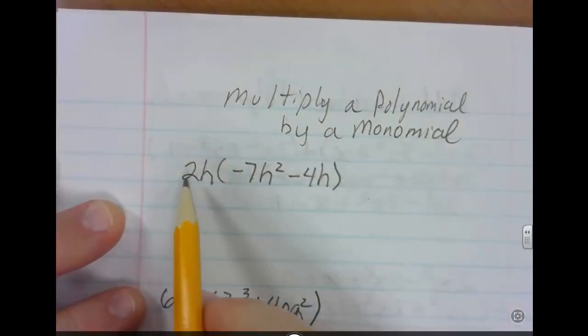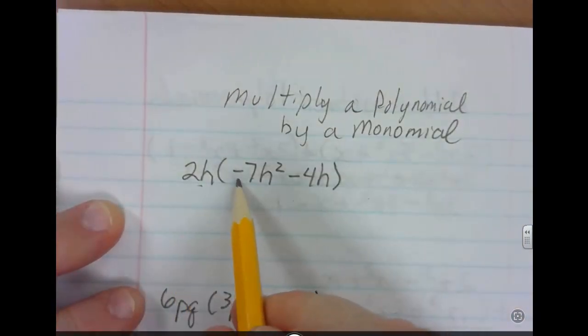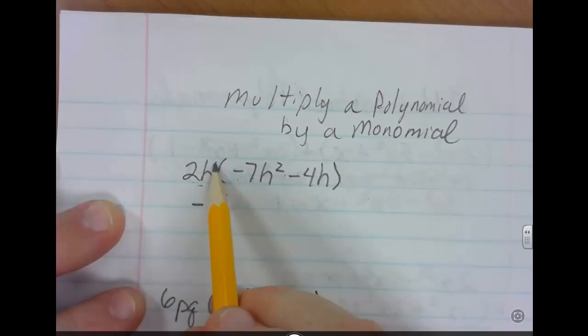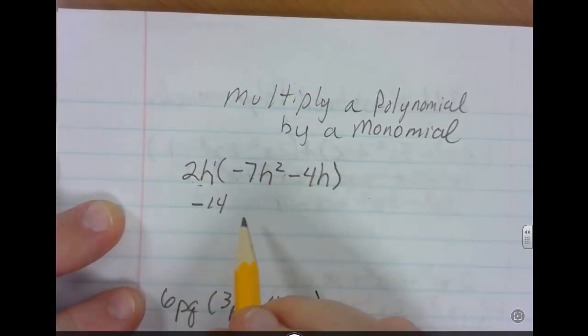So we'll try this first one here. We're going to take 2h and times it by negative 7h squared. So 2 times negative 7 is going to give you the negative 14. h to the first times h to the second is going to give you h to the third power.